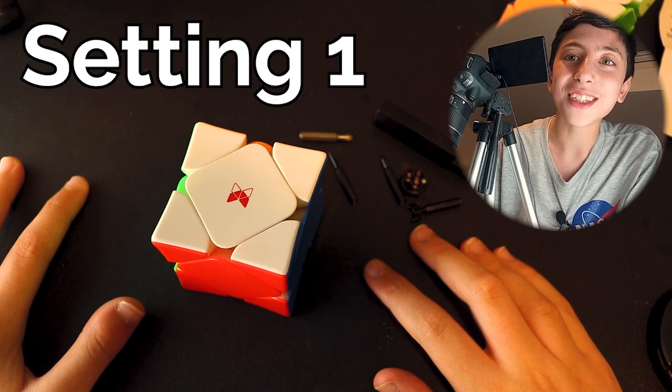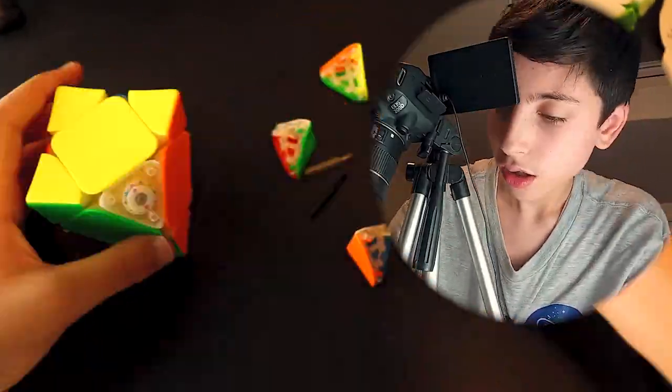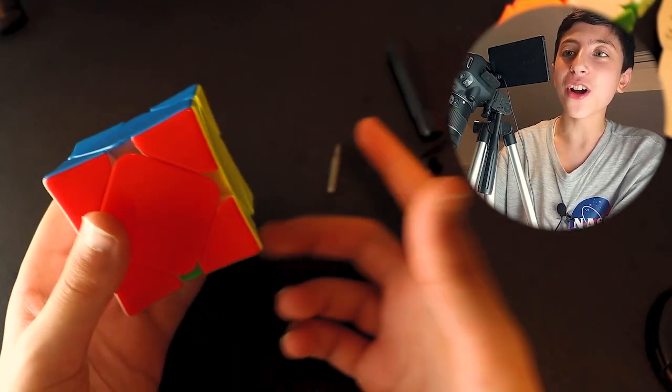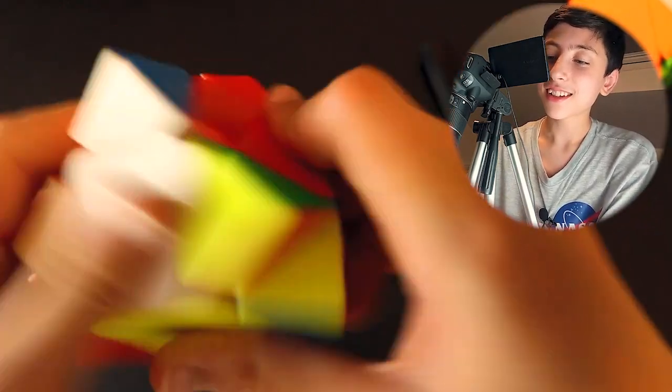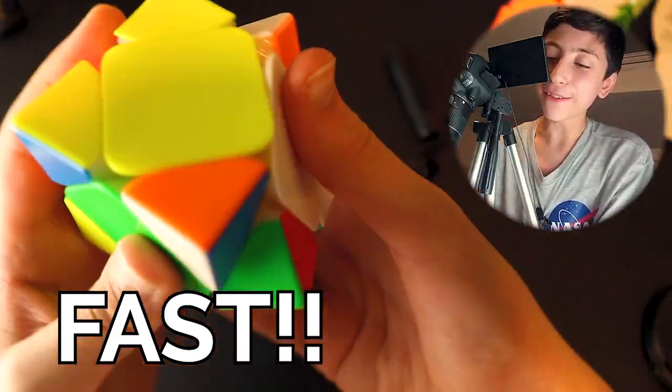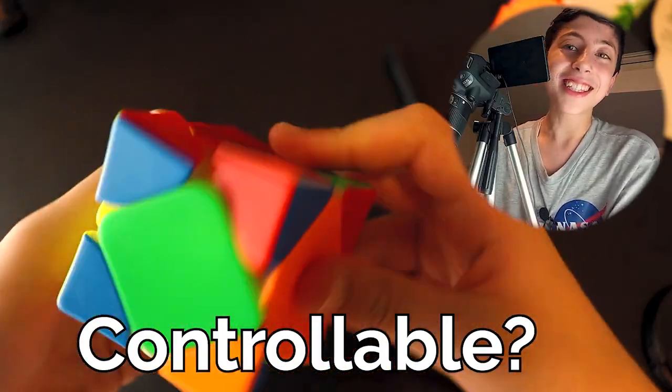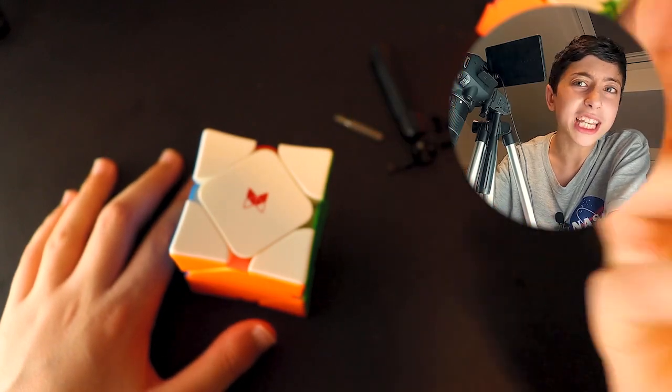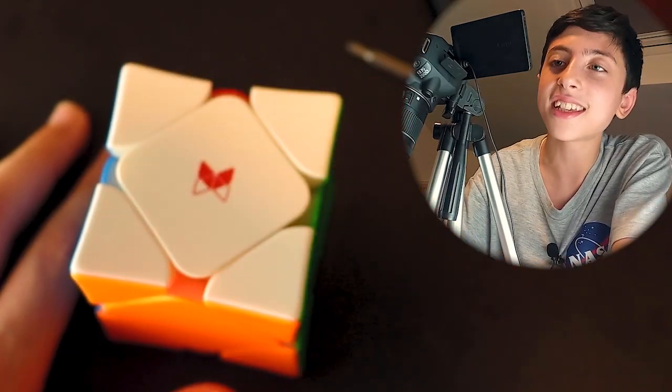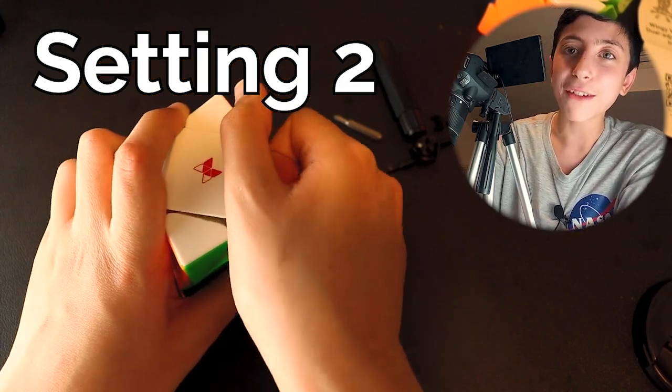I'm going to change all the settings to one and see how loose this skewb can become. So now I've adjusted the dual adjustment system to the loosest it could possibly be, let's do some turns. Wow this is so fast. Uncontrollably fast. It's quite nice turning a skewb that's this fast but like do I think it's going to be controllable? Definitely not. I doubt it. So I'd like to go somewhere in between like the default setting and this setting which is going to be setting two. So I'm now going to adjust everything to setting two and see if I like it.